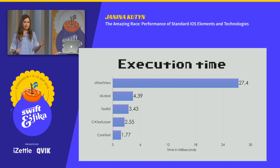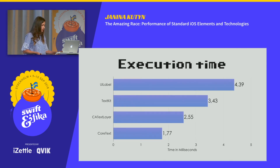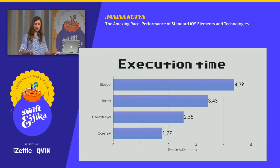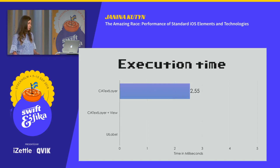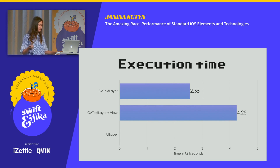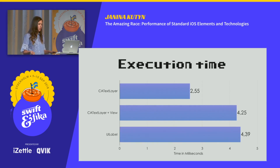These results make sense because UIKit components come with a lot of overhead from being in a higher-level framework. If we remove UITextView and compare the rest of the results to each other: UILabel took more than twice as long as Core Text, and was significantly slower than text layer, while Text Kit came out somewhere in the middle. One more thing about text layer — while it's performant, it doesn't feel very nice to mix layers and views in your code. So what if you add a text layer to a view and use that view? That came in at 4.25 milliseconds — and as we said, label was 4.39. So using a text layer wrapped in a view is not really much of a win.